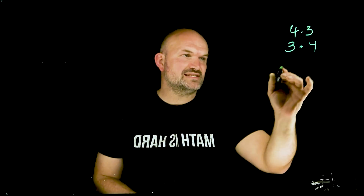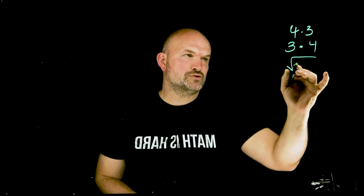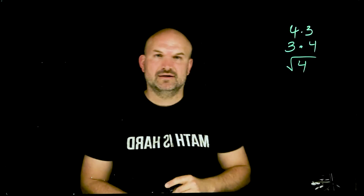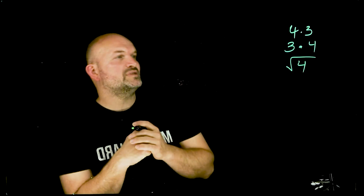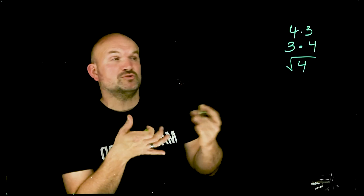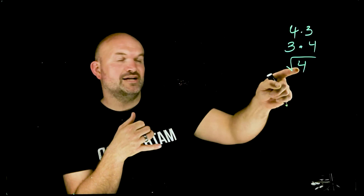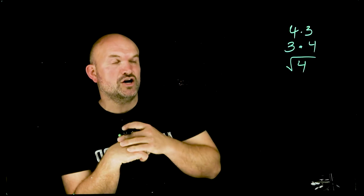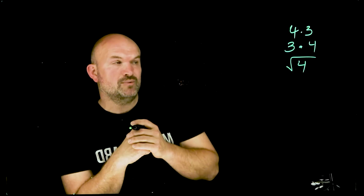We also need to remember what exactly taking the square root of something means. Taking the square root of something is basically asking: what number multiplied by itself is going to give us that argument, which we call our radicand.